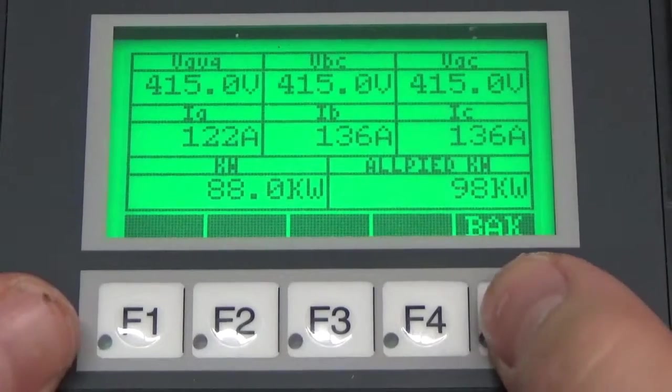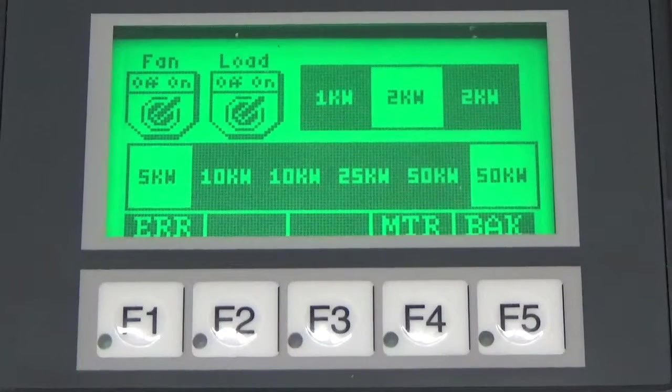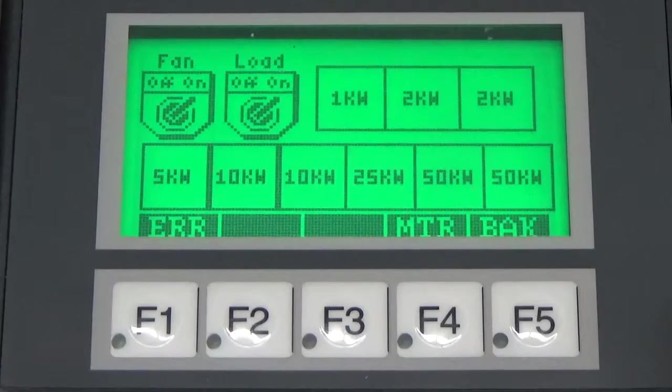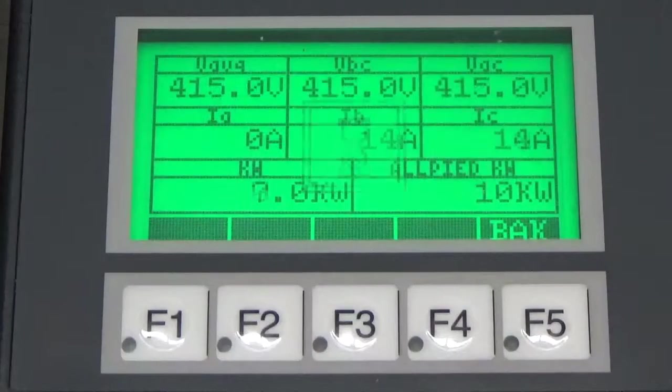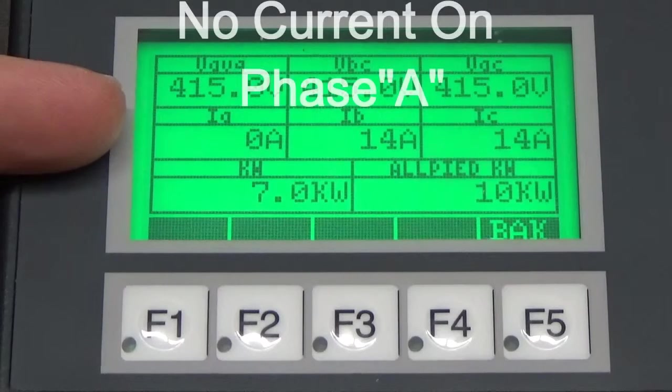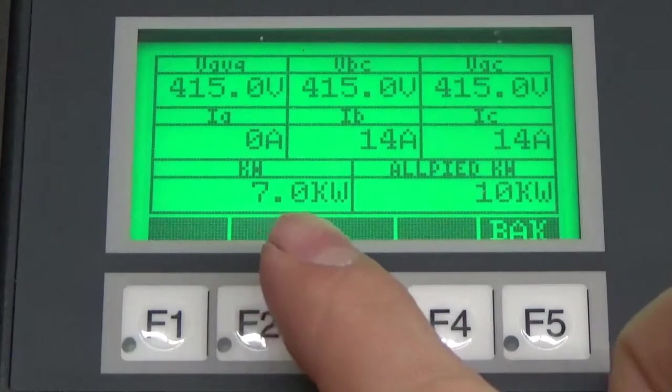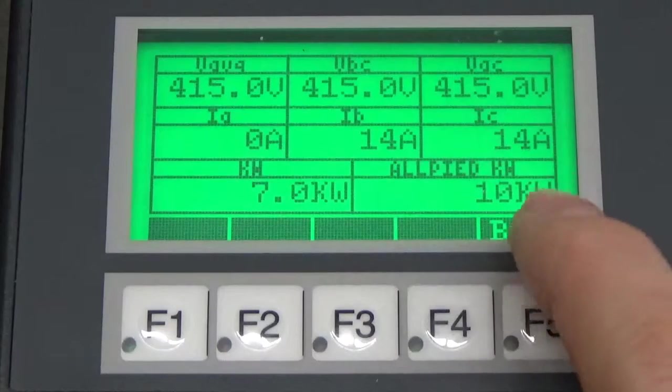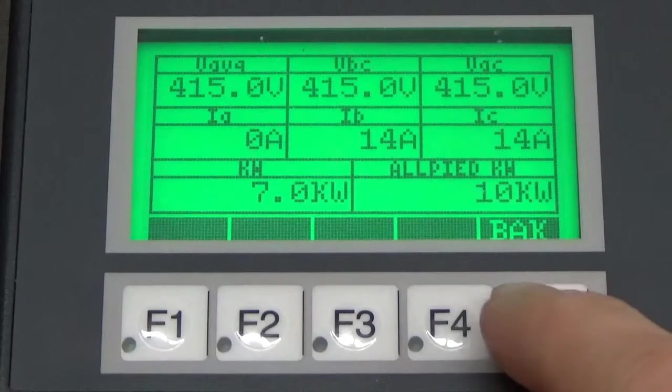So from here, we're going to go back to our load screen. And we're going to turn on one step at a time. After going through and turning on each step individually, I came to my first 10 kW step. I went back to my metering screen and found that I have no current on phase A. But B and C look just fine. You can also see that my kW off the meter is lower than my applied kW calculated from the 10 kW step that's on. So from here, we're going to start removing covers on the load bank and try and figure out what's causing this issue. Again, this is on our first 10 kW step.